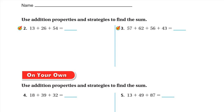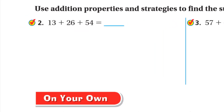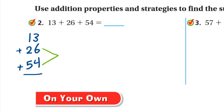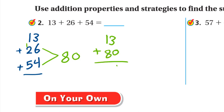Use additional properties and strategies to find the sum of 13 plus 26 plus 54. Line them up under each other. Look for digits that add to 10: 6 plus 4 equals 10, so start with 26 plus 54. Write 0, carry 1; 1 plus 2 is 3, plus 5 is 8 — so 26 plus 54 is 80. Now add 13: 3 plus 0 is 3, and 1 plus 8 is 9. The answer is 93.